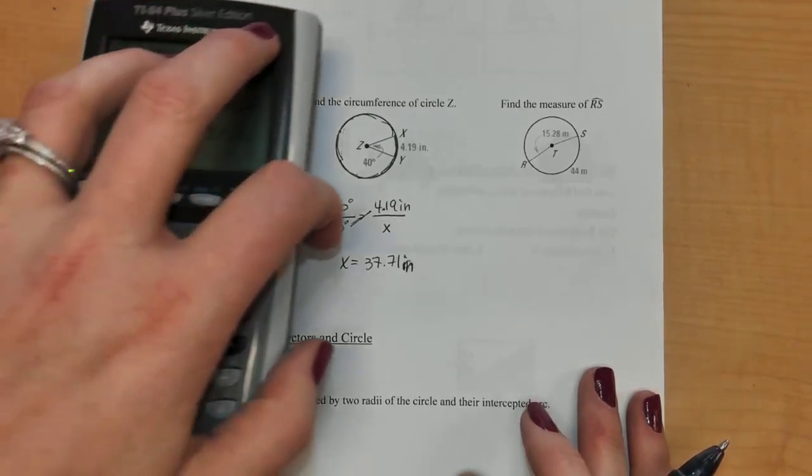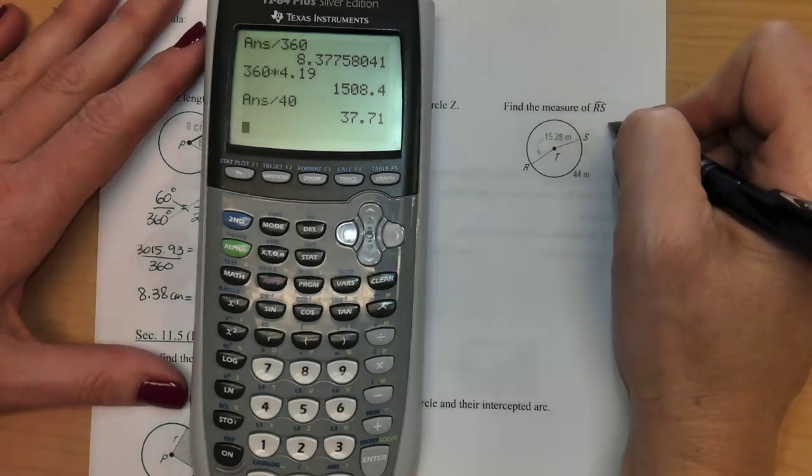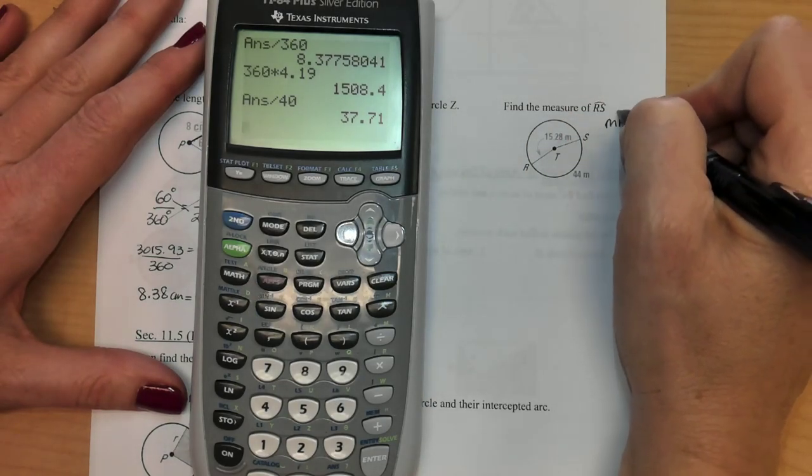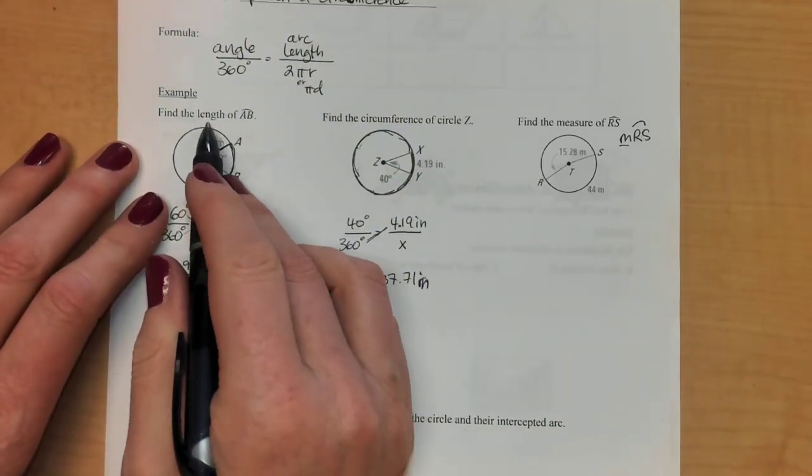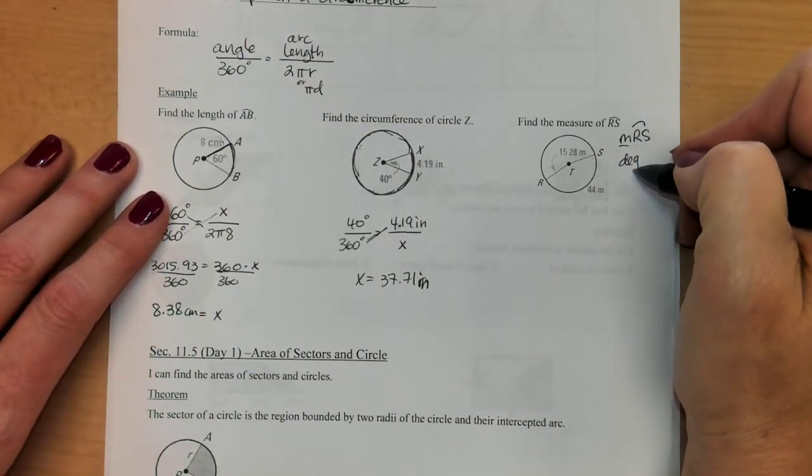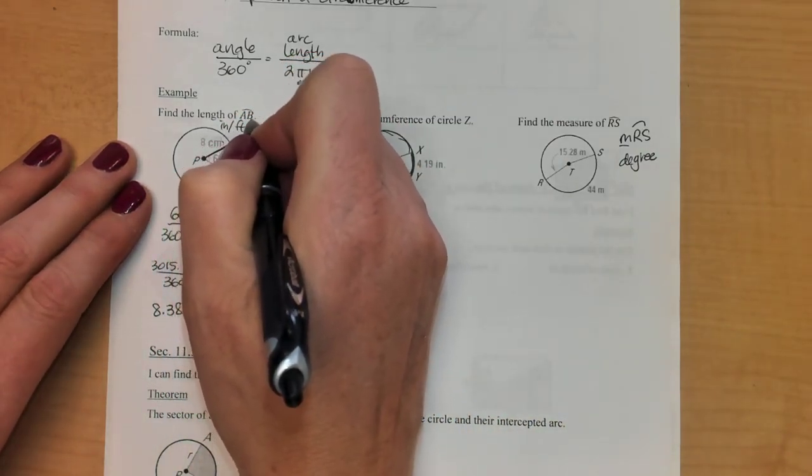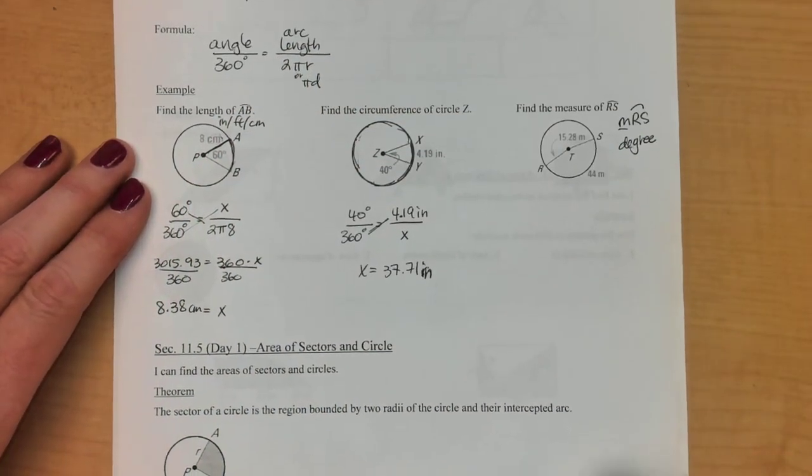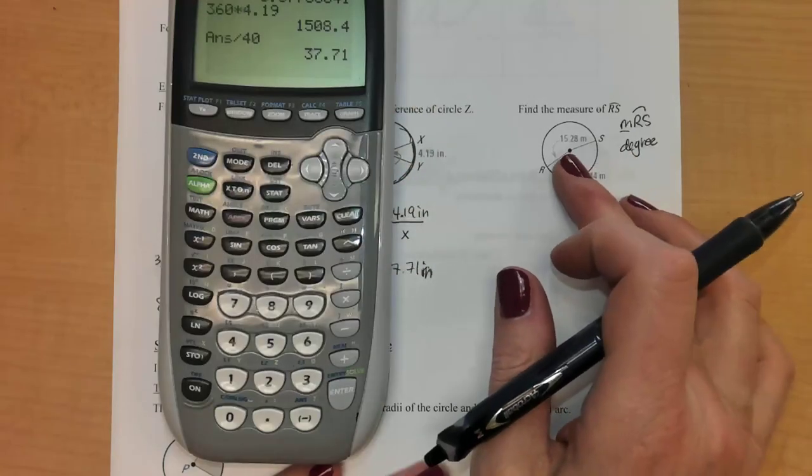Next up, last up says find the measure of R, so that could also say measure of RS. When they say measure versus length, measure means a degree. Length means inches, feet, centimeters. You want an actual length of the arc. This one is talking about the degree.